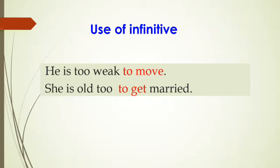The infinitive is a verb that has two types: to-infinitive and bare infinitive. 'He is too weak to move.' Here 'is' is finite. 'To move' is the infinitive — it doesn't change when subject changes. 'They are too weak to move', 'She is too weak to move', 'Ravi is too weak to move' — the finite changes but 'to move' does not. That is called to-infinitive.